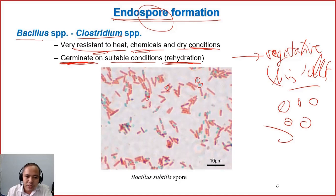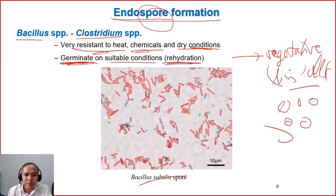When there are some stress conditions, bacteria will form spores inside the cell, and then the cell will die, but the spores will survive for a long time, even in very dry conditions. And they do not multiply.